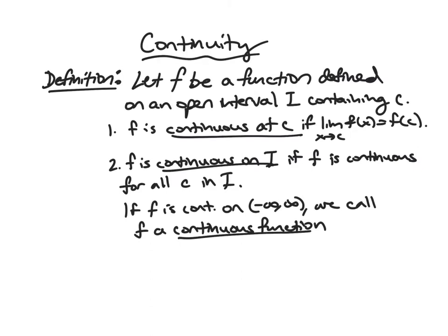So next, we'll look at f being continuous on an interval. And so this is pretty simple. It's just if it's continuous for every point in that interval. And lastly, if that interval happens to be negative infinity to infinity, so if f is continuous for any value, we call it a continuous function. And we have seen an example of this. Polynomials are continuous functions.